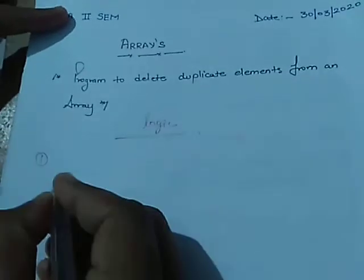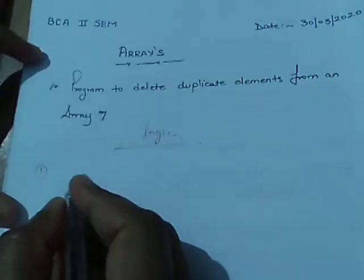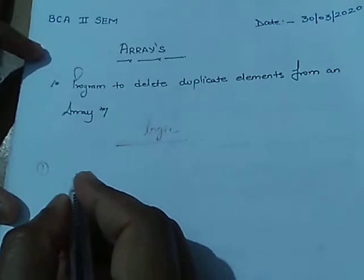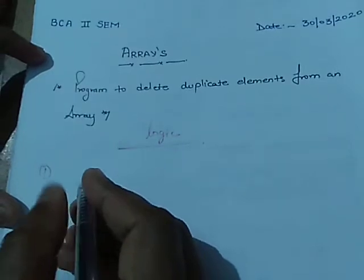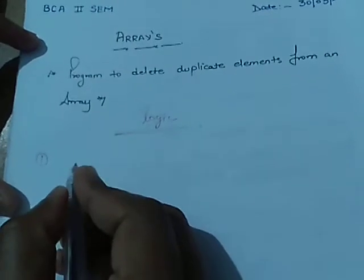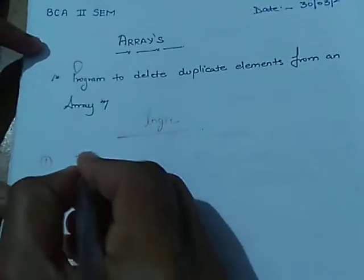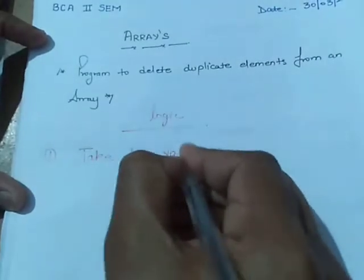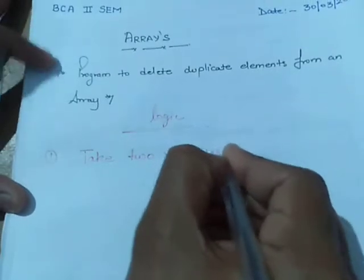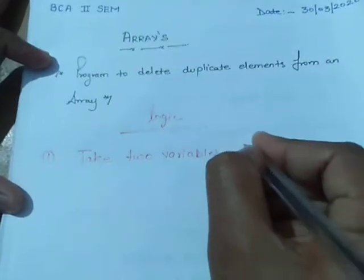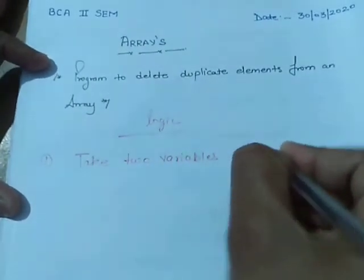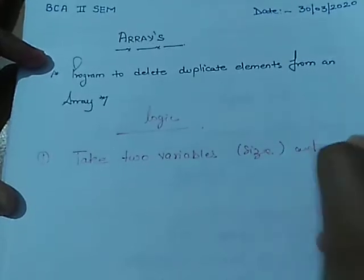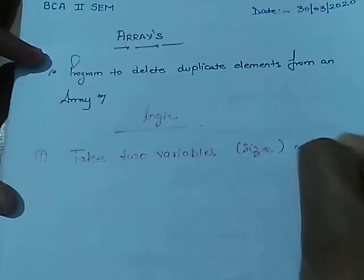Our first point is we have to input the size and elements of an array. We have to take two variables: number one is size, and number two is array.